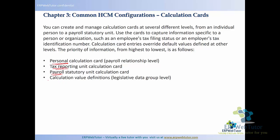The legislative data group level is not very common, but the tax reporting unit and PSU levels are fairly common, and you always have certain overrides at the employee level. This is how the priority works: the personal calculation card has the highest priority, then tax reporting unit, then legal entity, and the lowest priority is the LDG level.